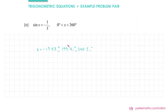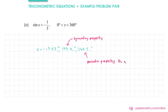Let's annotate these solutions so we know where they came from. The first solution we got using the symmetry property, and the second solution we got using the periodic property, which says that to get another solution we do our original solution plus or minus 360 degrees. Finally we'll round the answer to an appropriate degree of accuracy and eliminate the solution that we don't want, so our final answer is x equals 199 degrees and 341 degrees, rounded to three significant figures.